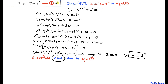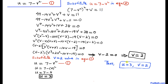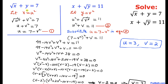Substituting v equals 2 into equation one to find u: u equals 7 minus 2 squared, so u equals 7 minus 4, giving u equals 3. We have now found u equals 3 and v equals 2.